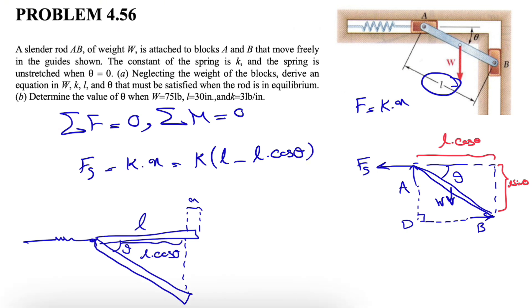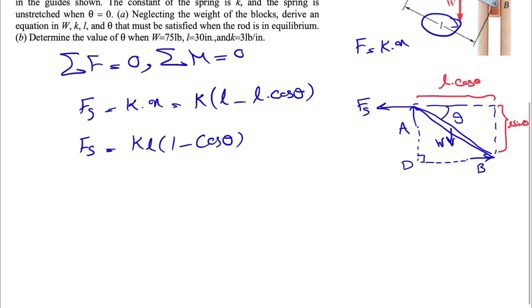We have the constant times L minus L times cosine of theta. So if that's the case, we have the force in the spring. Our F_S will be, if we factor L, we will have KL times 1 minus cosine of theta. Now that we have the force, we can go with our equilibrium equations.